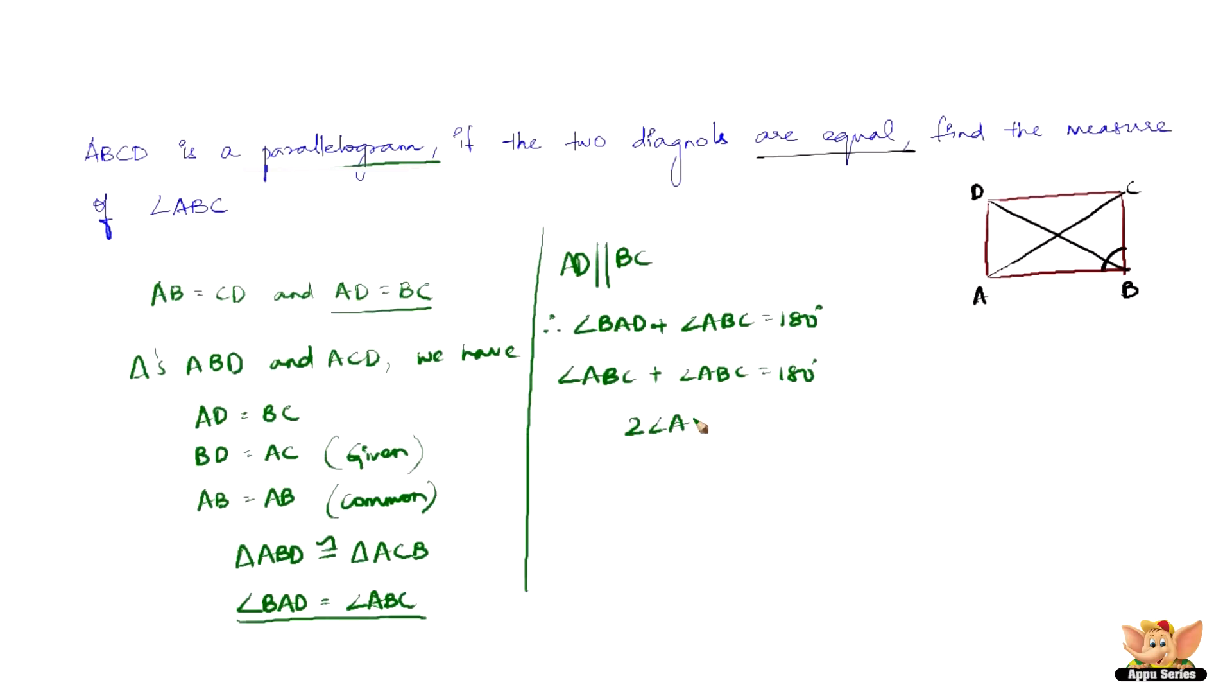This is nothing but 2 angle ABC equals 180 degrees. So angle ABC will be equal to 180 degrees by 2, which is nothing but angle ABC equals 90 degrees.